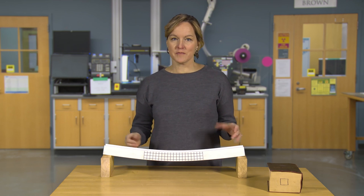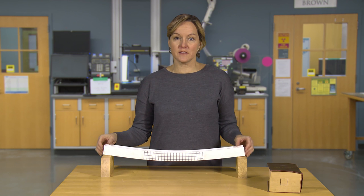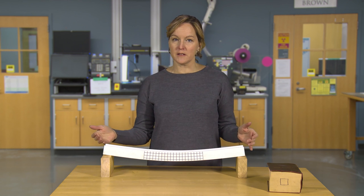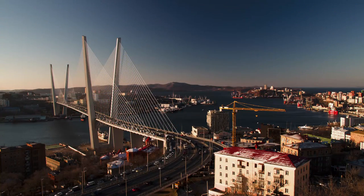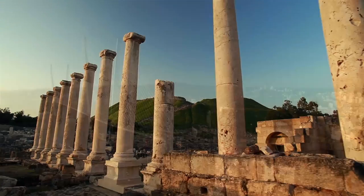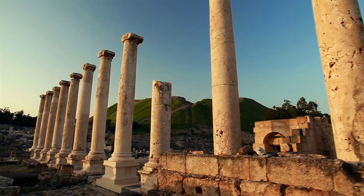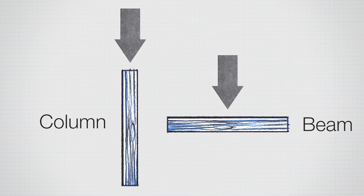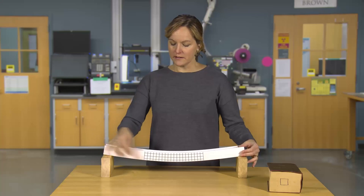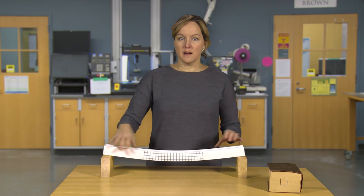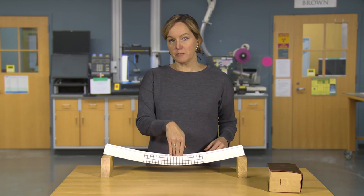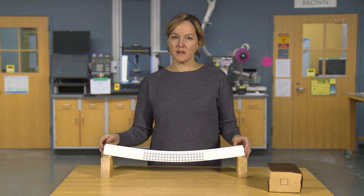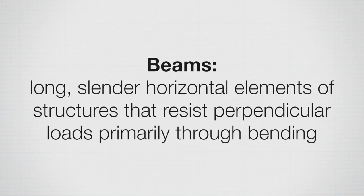So beams — what are they? They tend to be long, slender elements, which is nothing new. We've dealt with long slender elements in structures before. The main difference is how we apply the loads. With a beam, the loads are going to be applied perpendicular to the axis of the member. The axis runs along the length, and we push perpendicular, which causes a bending deformation — and that's the definition of a beam.